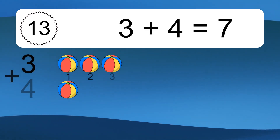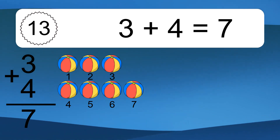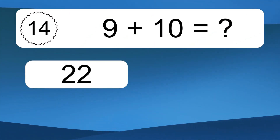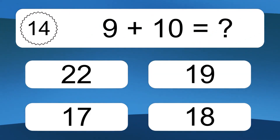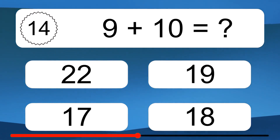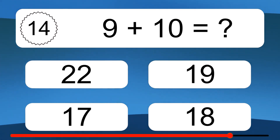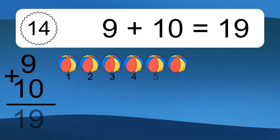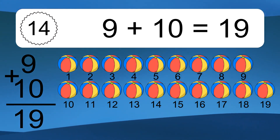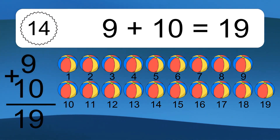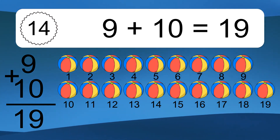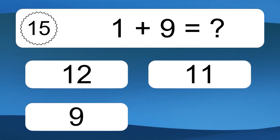3 plus 4 equals 7. Let's count it. 1, 2, 3, 4, 5, 6, 7. 9 plus 10 equals what? 9 plus 10 equals 19. Let's count it. 1, 2, 3, 4, 5, 6, 7, 8, 9, 10, 11, 12, 13, 14, 15, 16, 17, 18, 19.